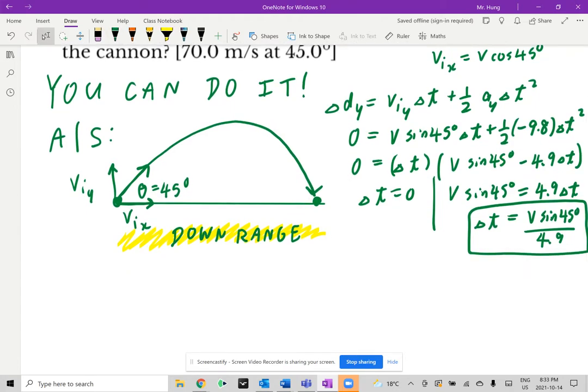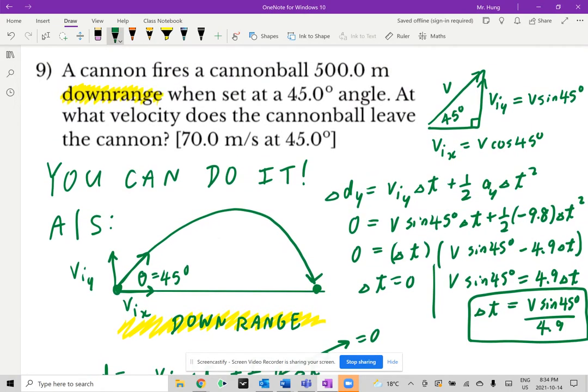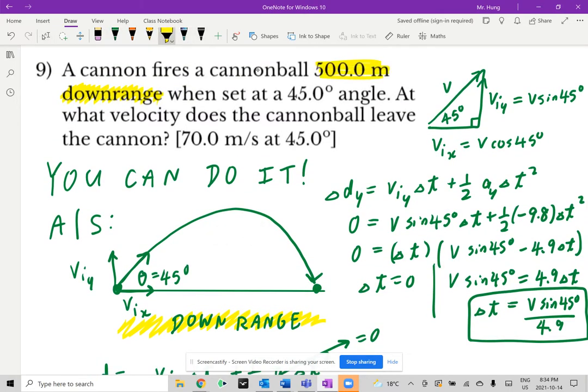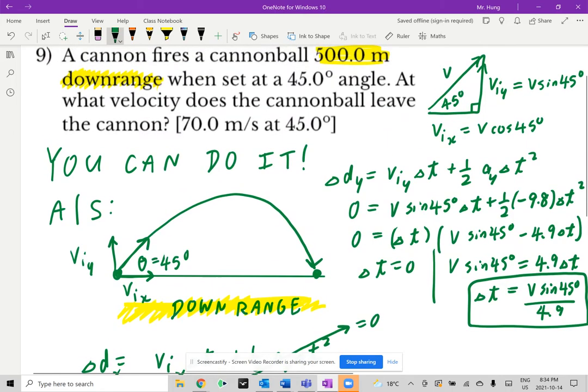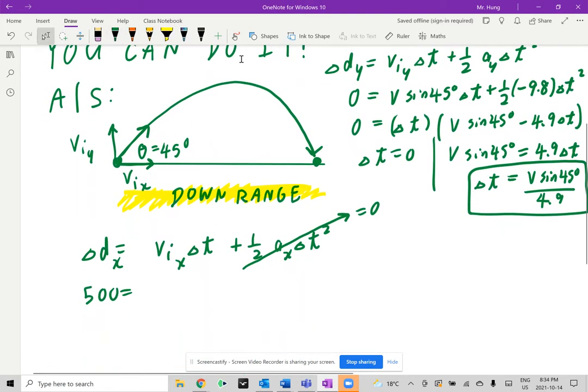Now, we can use the same setup, delta D which equals to V_i times T plus half AT squared. The difference now is we're looking at the horizontal component. So this is going to be X. And of course, the value for A_X, the acceleration horizontally speaking, is always going to be zero. So now we go back. Think about the downrange. In the given, that's going to be 500 meters. 500 meter downrange, which is what we talked about from the diagram. So you go back, and you can write down 500 equals to V_i_X. And V_i_X is the initial velocity, the horizontal component, which is V cosine 45 degrees times time.